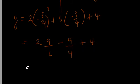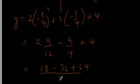we will get 2 times 9/16 minus 9/4 plus 4, which will give us 18. And I'm going to get a common denominator of 16 here. So 18 minus 36 plus 16 times 4, which is 40 plus 24, 64, all over 16.